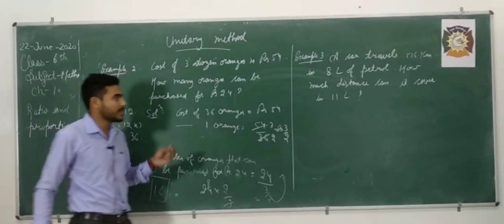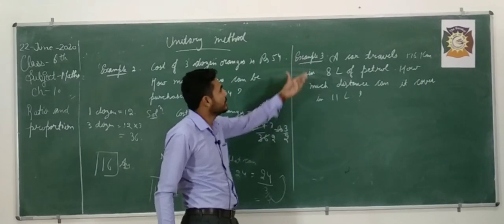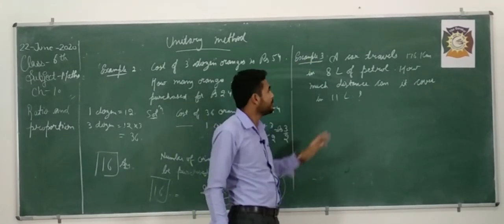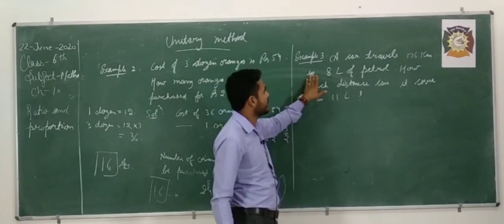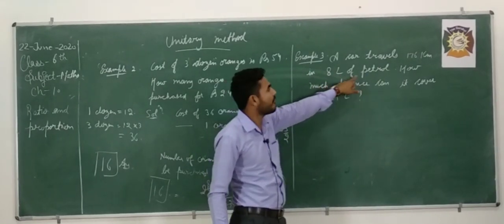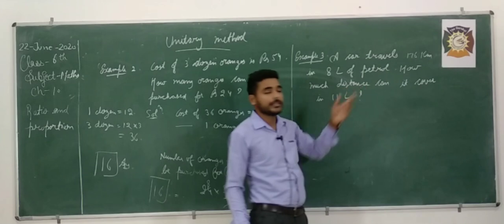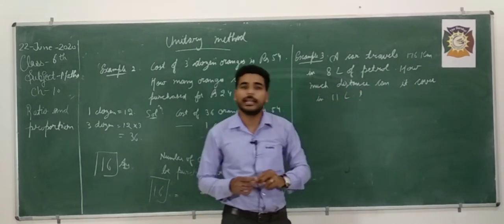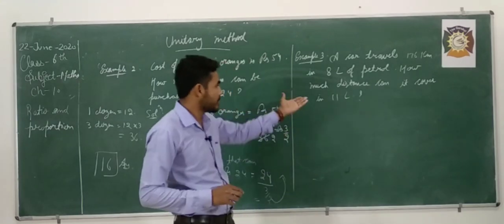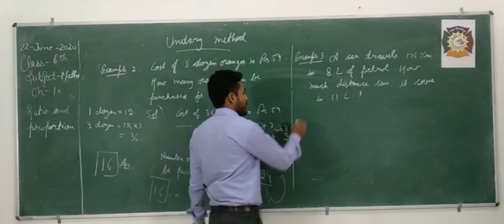That means the number of oranges that we can purchase for Rs. 24 is 16. That is the required answer. I hope you must be clear. Now, proceed towards the example number 3. A car travels 176 km in 8 liters of petrol. And we have to find how much distance can it cover in 11 liters. It is also based on the unitary method.